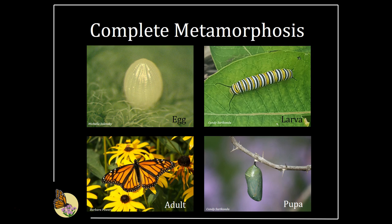First, we'll start with identifying each life stage of the monarch. Monarchs go through a complete metamorphosis during their lifetime, which consists of four stages: egg, larvae, pupae, and adult. Each of these stages look quite different from each other, so it's important to be able to identify monarchs during all of these stages to make sure none are overlooked during your monitoring. We'll review all these stages during this presentation.